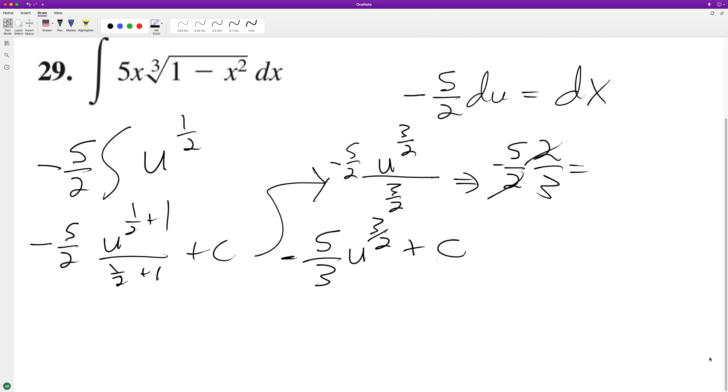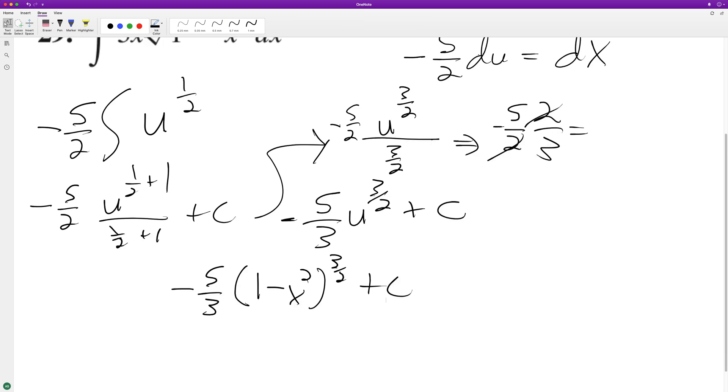All right, and then we substitute back in, so we get negative five thirds times one minus x squared raised to the three halves, plus C. So this is our final integral, but let's go ahead and test it.